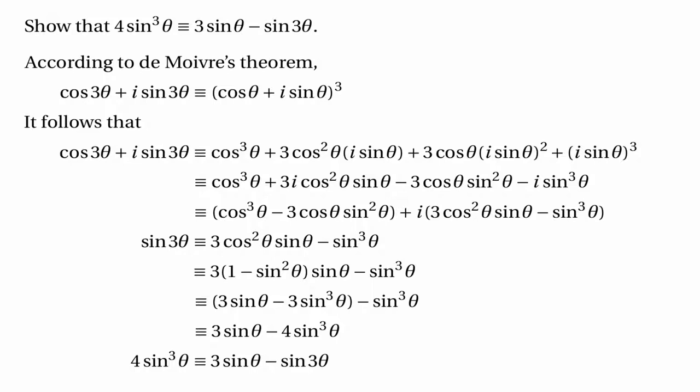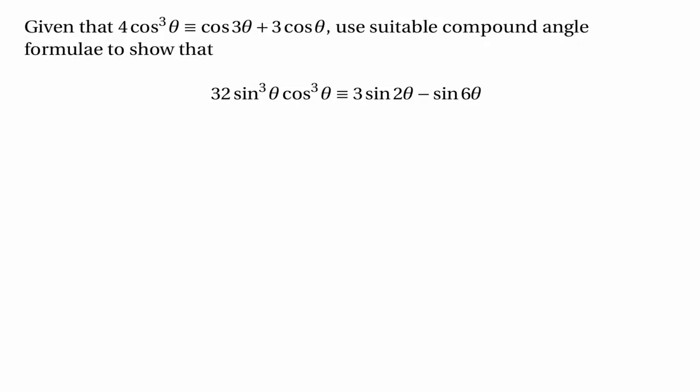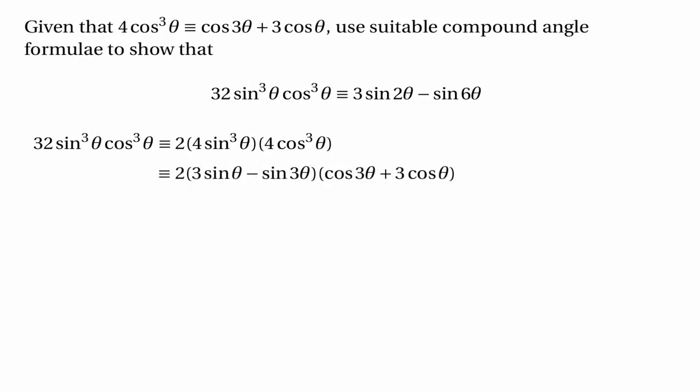This is a very important technique to remember involving De Moivre's theorem. The next part says: given that 4 cos³θ is identically equal to cos 3θ plus 3 cos θ — which we could have worked out by equating the real parts — use suitable compound angle formulae to show that 32 sin³θ cos³θ is identically equal to 3 sin 2θ minus sin 6θ. Note that 32 sin³θ cos³θ is 2 lots of (4 sin³θ)(4 cos³θ), and we know expressions for both, so it's natural to write this as 2(3 sin θ − sin 3θ)(cos 3θ + 3 cos θ).